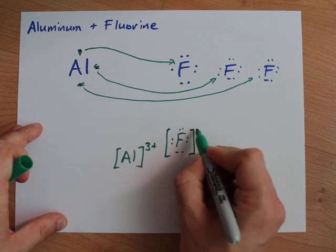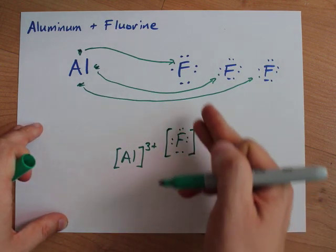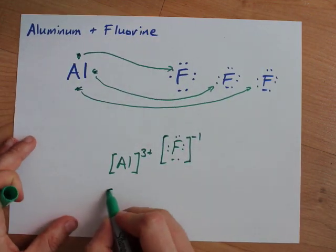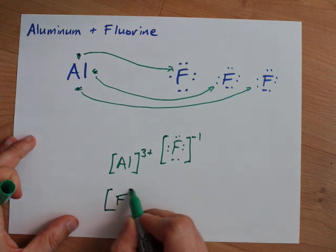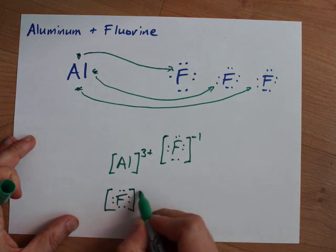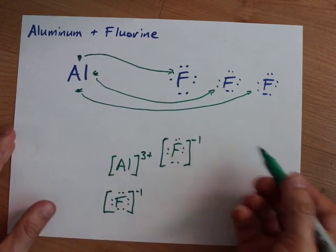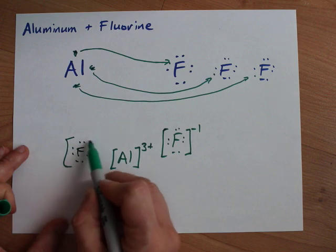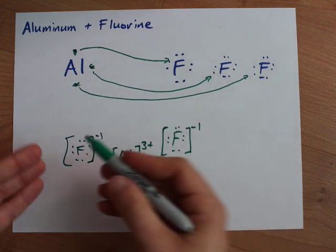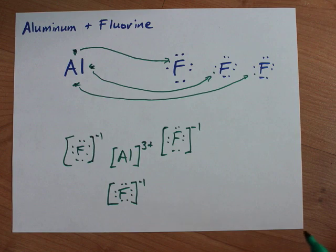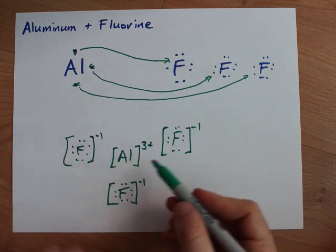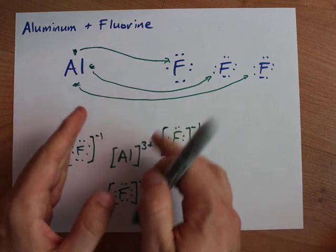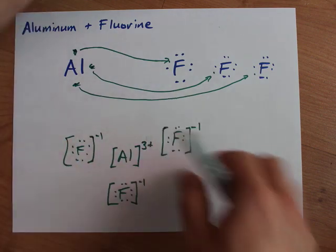Each fluorine has a minus-one charge because it only gained one electron from the aluminum. There are three of them, and each fluorine has eight electrons — one extra from what it brought. So you've got your aluminum with ionic bonds toward each of the three negative fluoride ions. Ionic bonding — beautiful. Let's do it again.